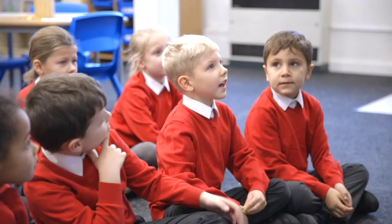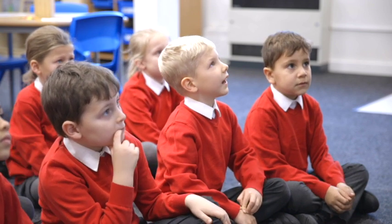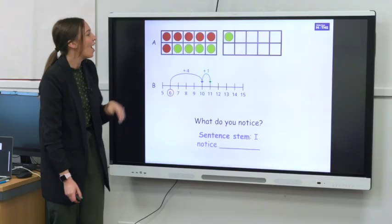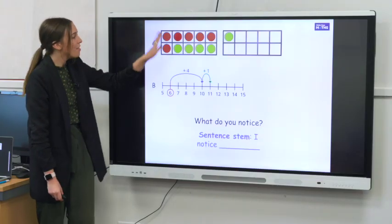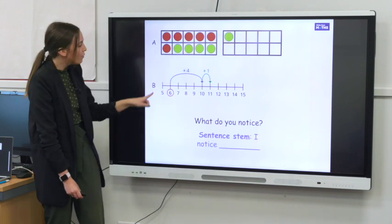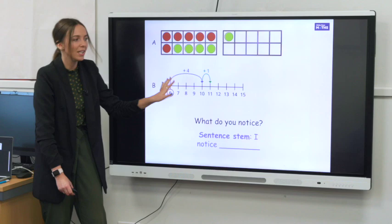I noticed that four add one equals five, and one add four equals five, and you can switch around. Okay, so you've noticed that there are four yellow counters, add one more in the tens frame, but you've also noticed you've added four and then one more on the number line. Super, well done.